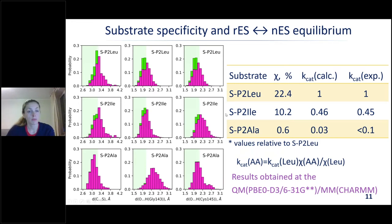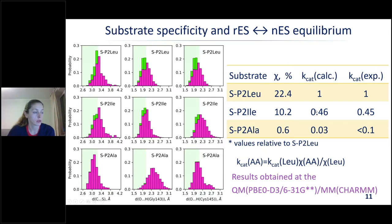After that we performed additional calculations for other substrates with other amino acid residues at the P2 position and obtained a nice correlation between the calculated and experimental k_cat values. I'm not going to show these results as they are somewhat off-topic.